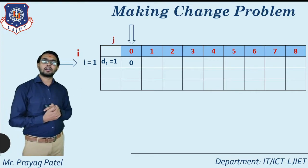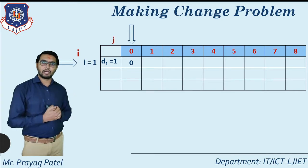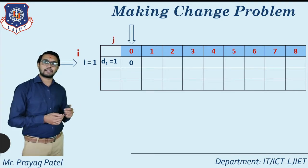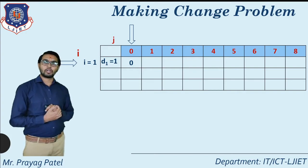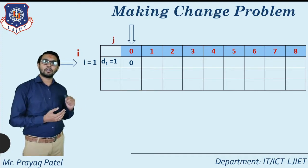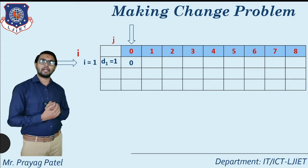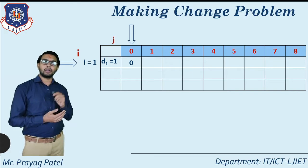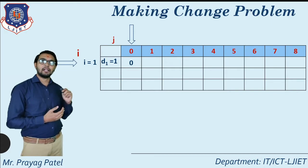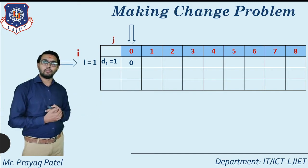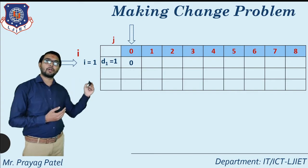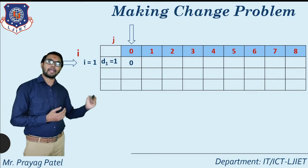Initially we consider row number 1, meaning we have only one coin: d1 equal to 1. Many coins of denomination 1 are available, but coins of 4 and 6 are not available at that time. So here consider only one type of coin is available. The row represents the coin number and the column represents the amount for which we are making change. Column number 0 means change for 0, column number 1 means change for 1, up to column number 8 means change for 8.